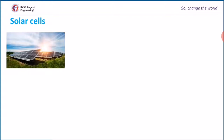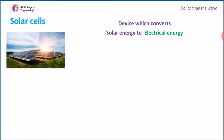If we utilize solar energy properly, it can be directly converted into heat energy or electricity. The device which converts solar energy to electrical energy is known as a solar cell. These solar cells are broadly classified as inorganic solar cells, organic solar cells, and dye-sensitized solar cells.